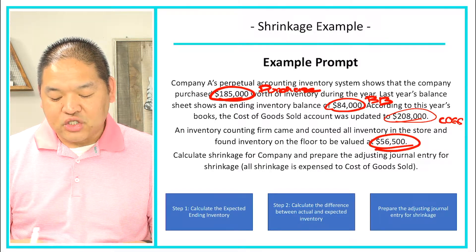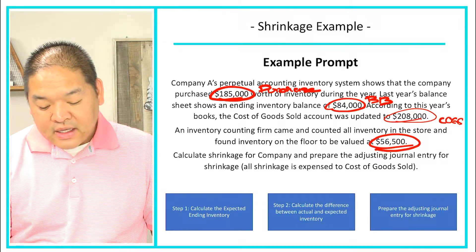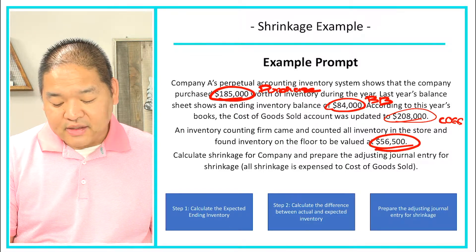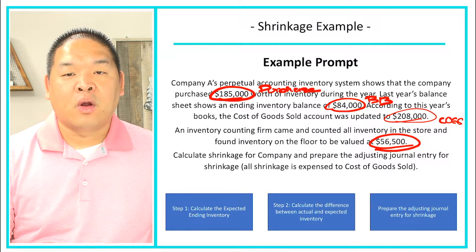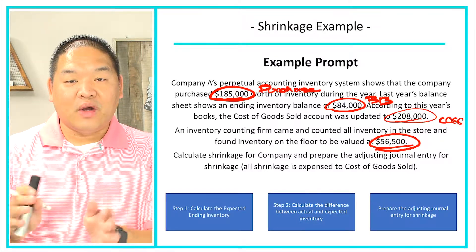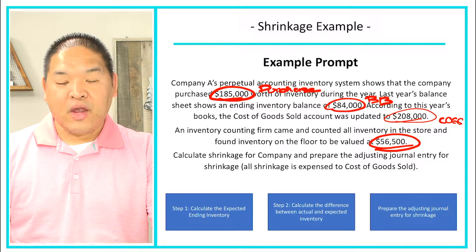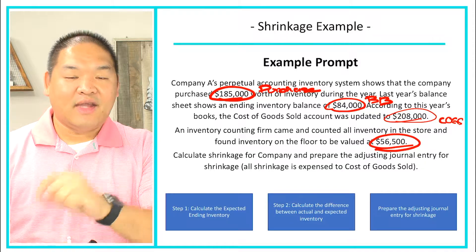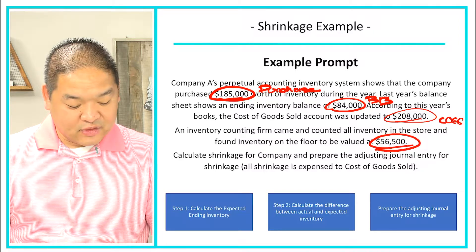The question asks us to calculate shrinkage and prepare the adjusting journal entry. All shrinkage is to be expensed in cost of goods sold. We have three steps: step one is to calculate the expected ending inventory, step two is to calculate the difference between actual and expected, and step three is to prepare the adjusting journal entry for shrinkage.